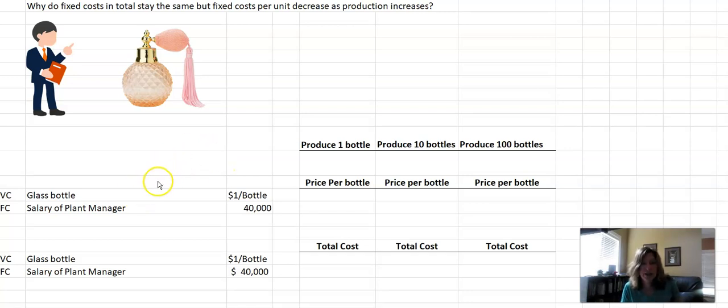If we think about a perfume manufacturer, so they're going to manufacture perfume, one of the variable costs would be the perfume bottle. We're going to say it costs $1 per bottle. One of the fixed costs would be the plant manager's salary. He is going to be paid $40,000 a year. So let's look and see what happens.